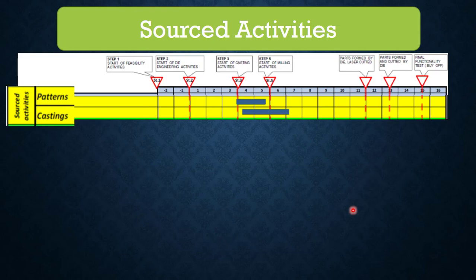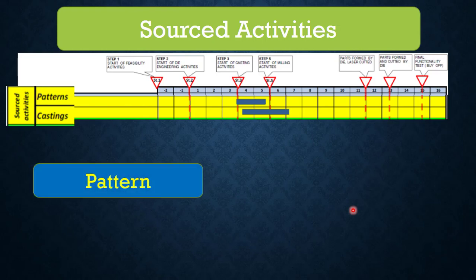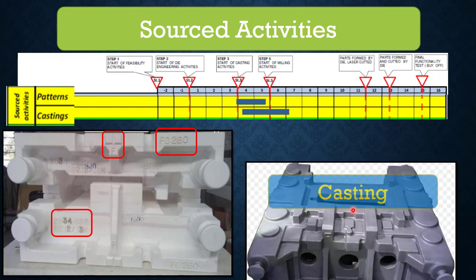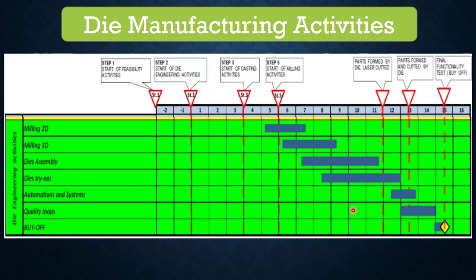Next are the sourced activities. Once die design is frozen, we go for pattern and castings. Number one is pattern — you can see the thermocol pattern for a die with important details like front center, casting grade, part number, upper tool, lower tool, and stage details. After pattern approval for rib position, thrust location, backup blocks, guides and lifting arrangement, we then go for the casting phase.